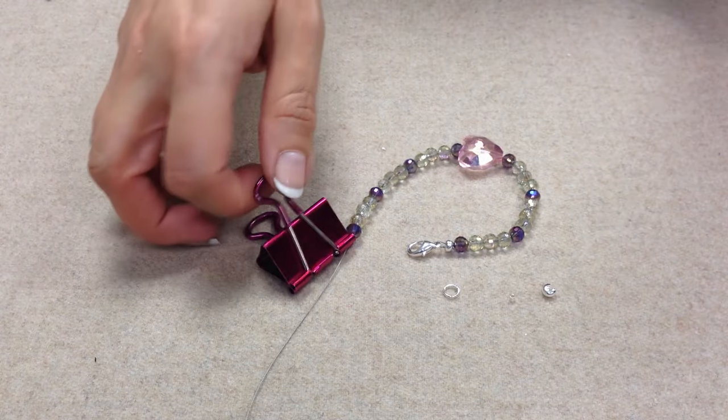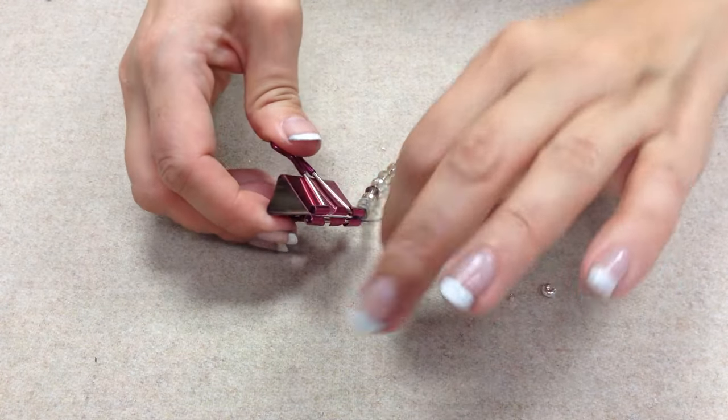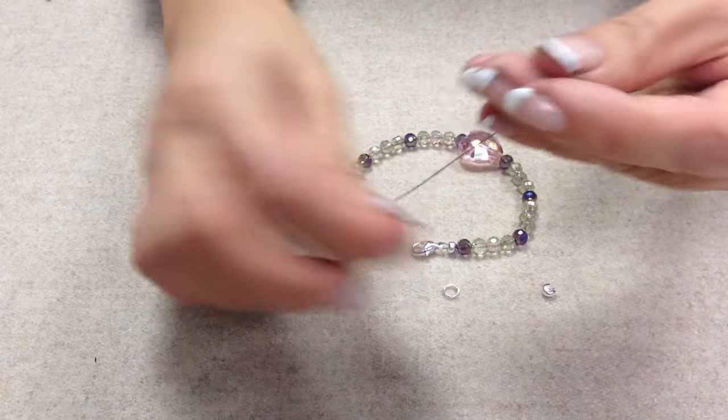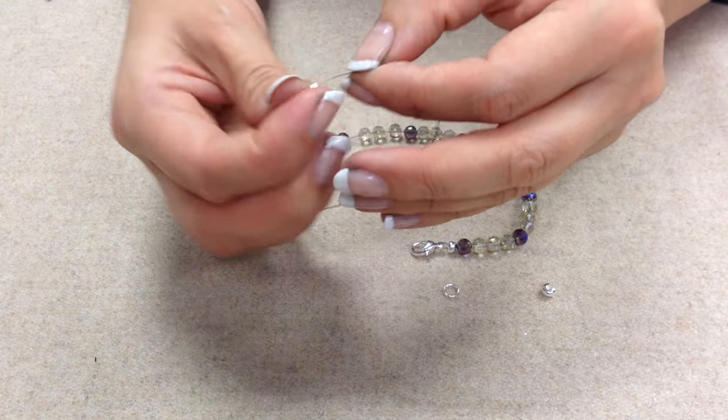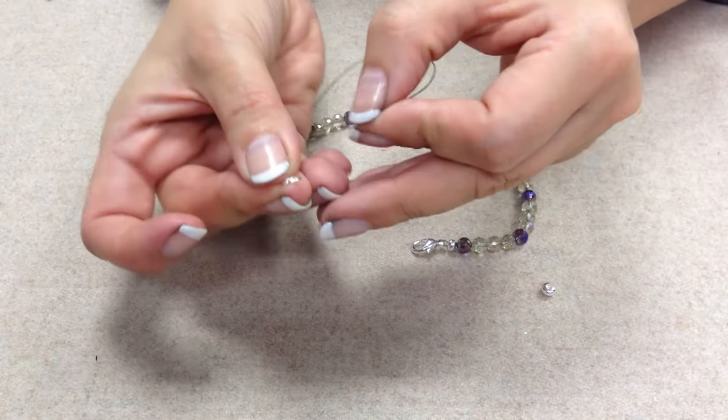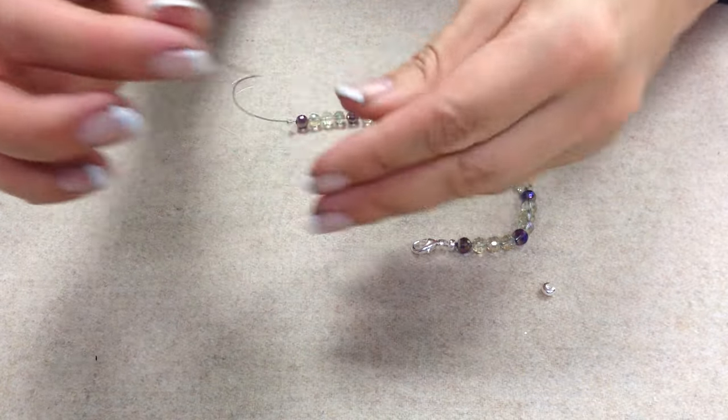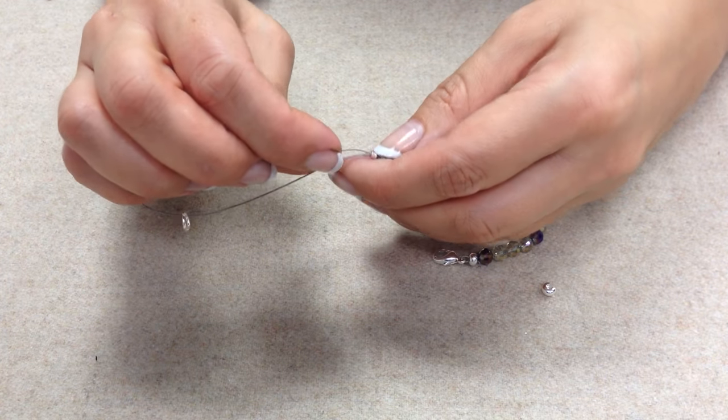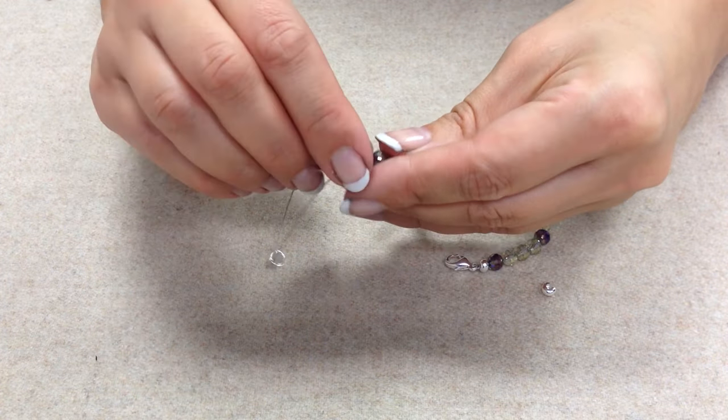Next, attach the second part of the clasp, which is the ring fastening. Remove your bulldog clip and do the same as you did previously: thread the crimp tube onto your excess beading wire, thread on the ring, and pass the beading wire back through the crimp.